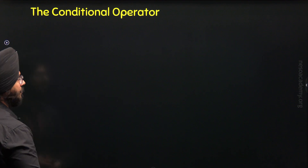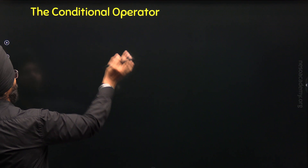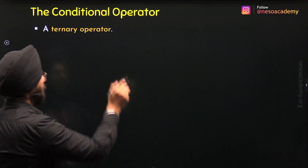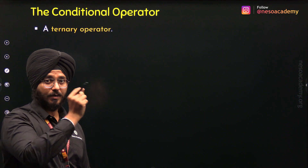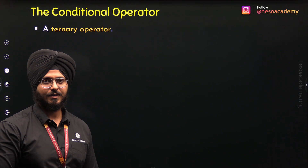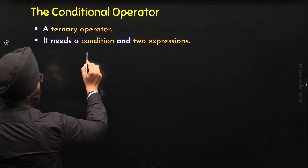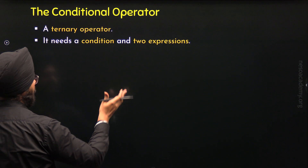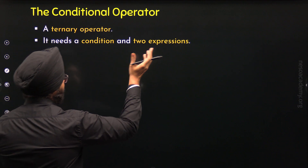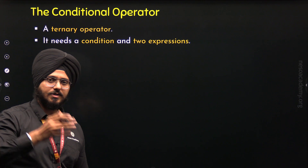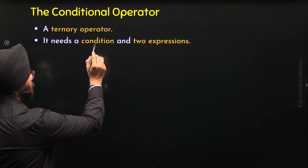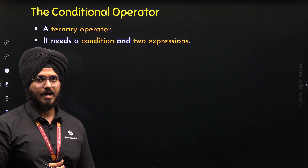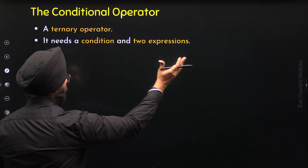So what is the conditional operator? The conditional operator is the only ternary operator available in C++. By ternary, I mean three — this operator accepts three operands. It needs a condition and two expressions. The first operand must be the condition and the remaining two must be expressions. An expression is something that evaluates down to a value. A condition is also an expression but it evaluates down to a Boolean value — either true or false.